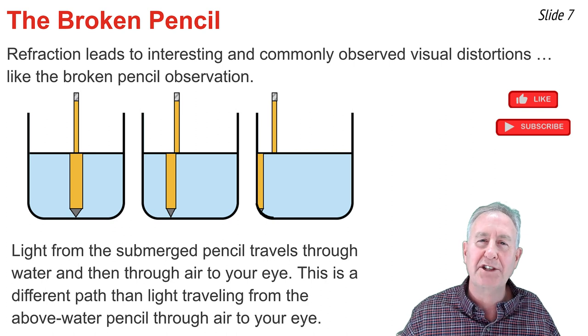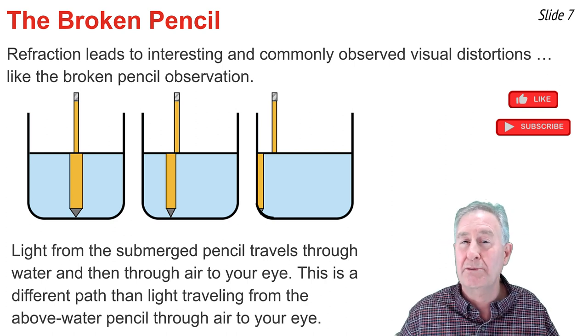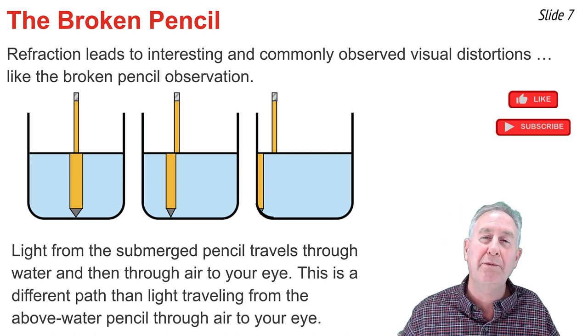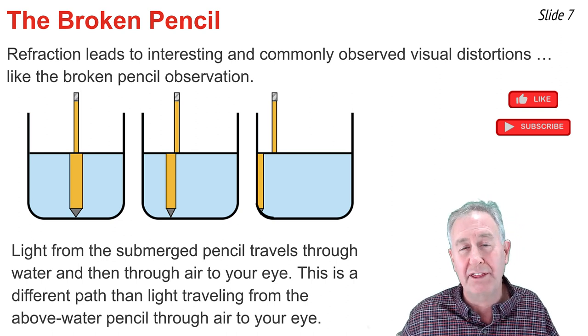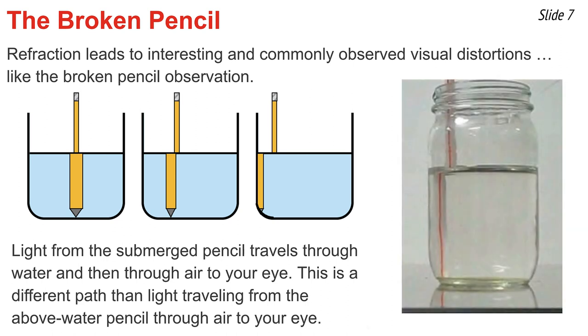Light from the submerged pencil travels from water to air to your eye, whereas light from the above water pencil simply travels from air to your eye. I agree, there is some glass in between, but it's the same glass for the submerged pencil as it is for the above water pencil. It makes very little difference given how thin that glass layer is.